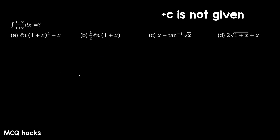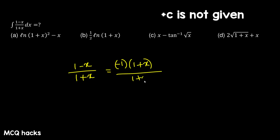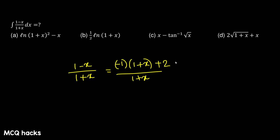This is an example of this type. Let's try it. 1 plus x is equal to 1 minus x. Now let's see: x equals x. 1 equals 1 plus x. 1 plus x equals 1 plus x. 1 plus x equals 1. So plus 2 equals 2. Then we will have to do the integration.